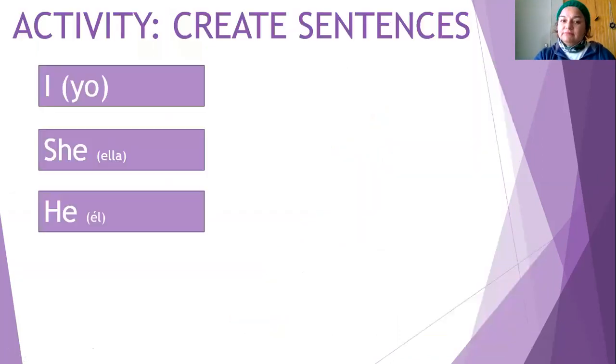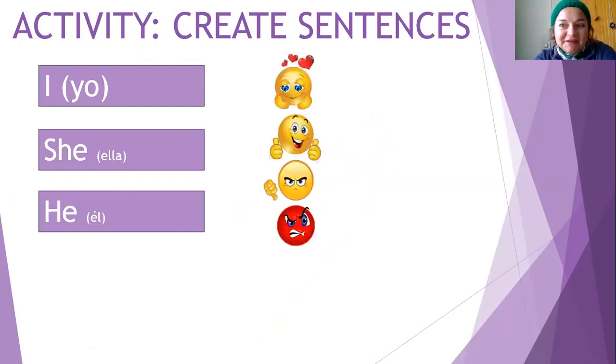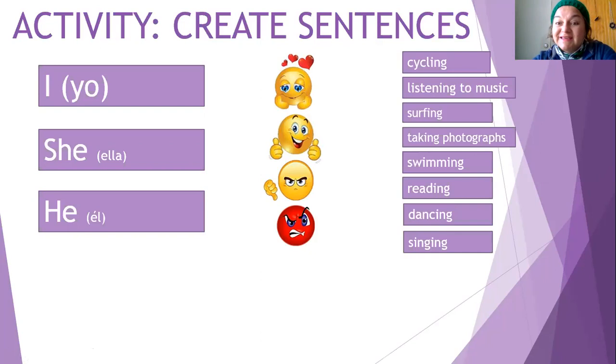Entonces, ahora, tienen una activity. Ustedes lo van a hacer en su cuaderno y después le toman una foto y la suben. O puede ser en un documento de Word, aunque yo prefiero que lo hagan en el cuaderno y suba la foto. I son nuestros sujetos. I, she, or he. Esos van a ser nuestros sujetos, nuestras personas. Después tenemos... ¿qué significaban esos monitos? Tienen que saber qué significan esos monitos.